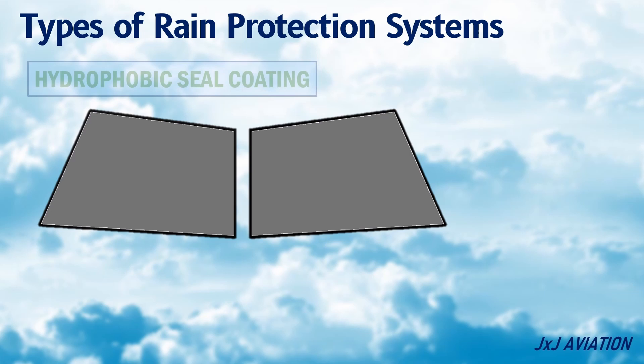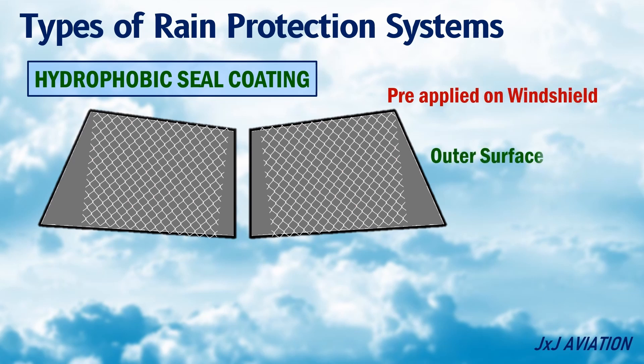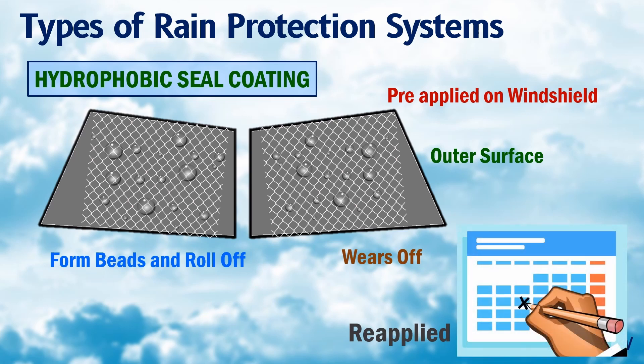Hydrophobic Seal Coating. This is similar to the rain repellent system, but the coating is pre-applied on the windshield. The coating is applied on the outer surface of the windshield. This coating causes the water to form beads and roll off, which improves the visibility. The coating wears off over time, so it has to be reapplied after a defined time period.